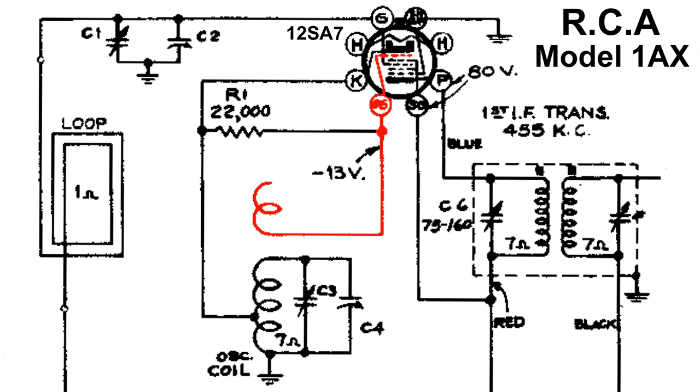But as you can see, we've got an open coil and it gets connected to a 22,000 ohm resistor and then continues on to the control grid of the 12SA7.